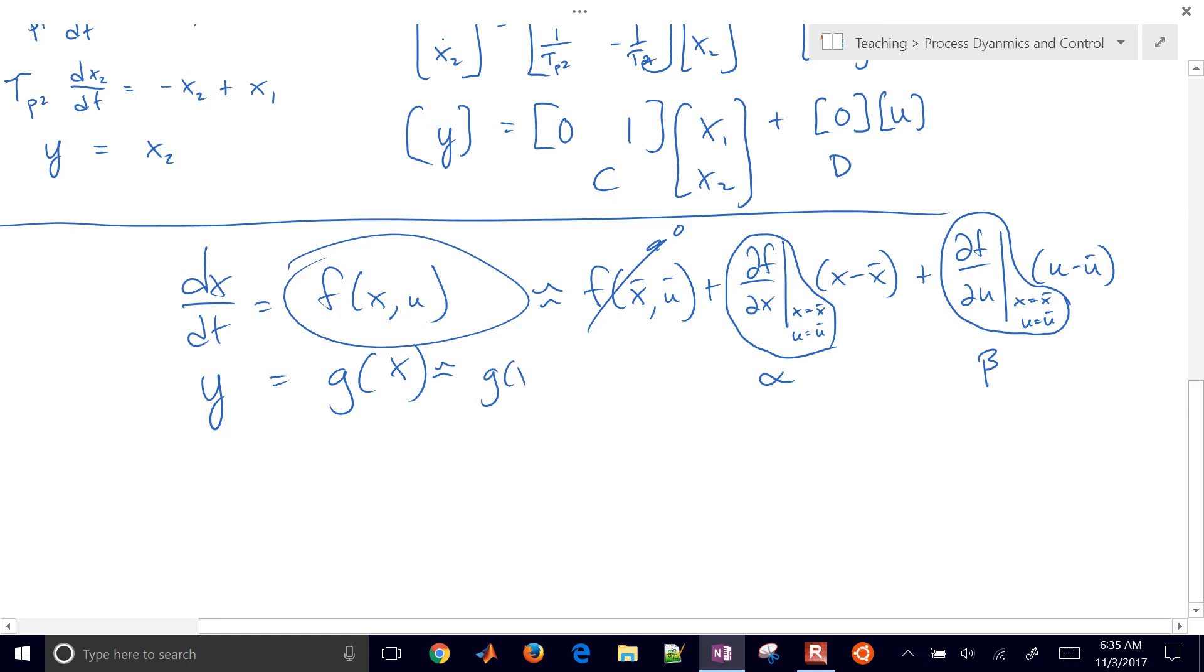So that's going to be G of plugging in the nominal values, plus, and then we'll take the derivative of G with respect to X and plug in the nominal value there. And I'll call this one right here, I could call that gamma, for example.